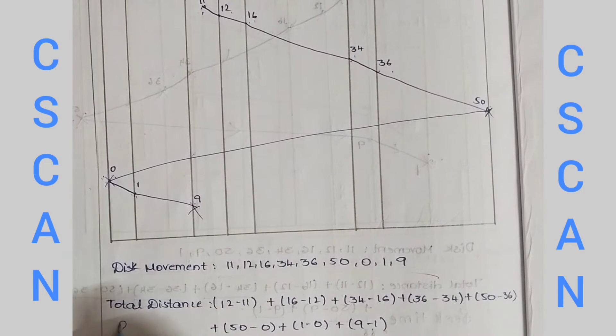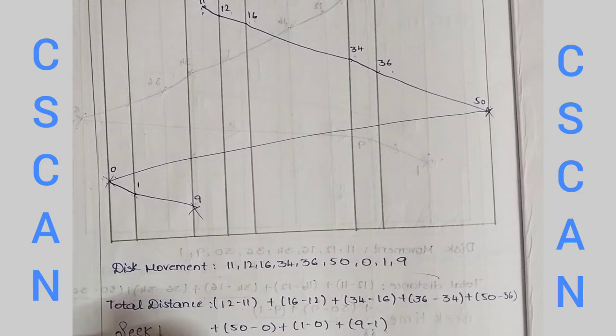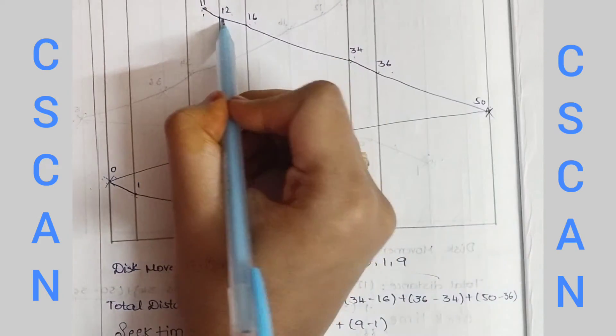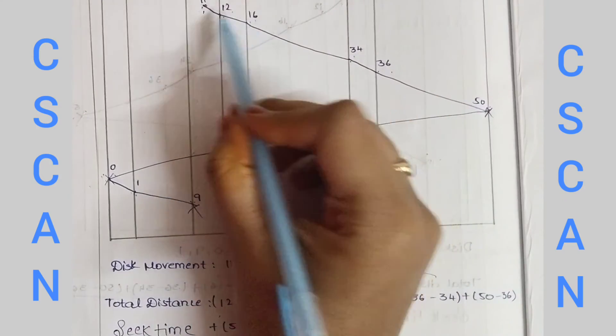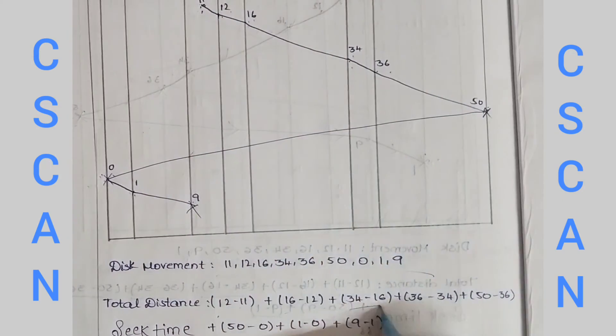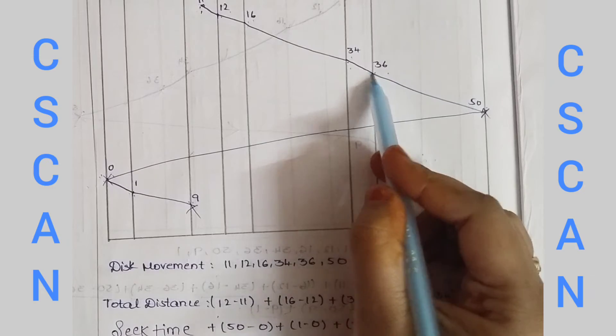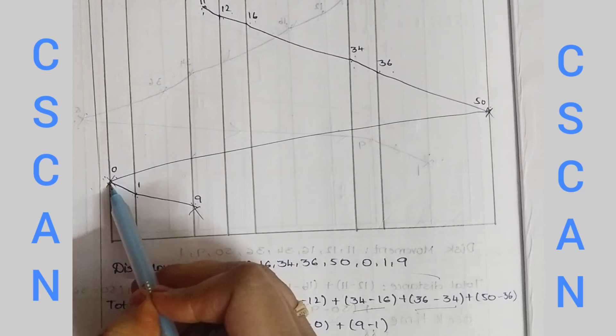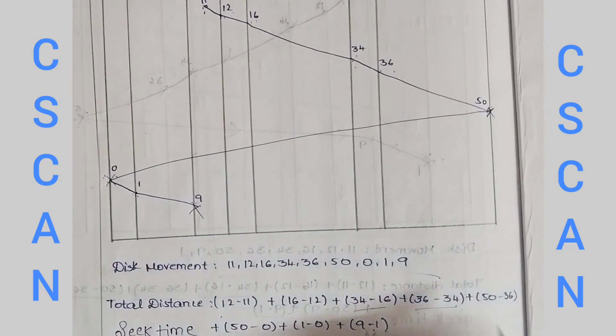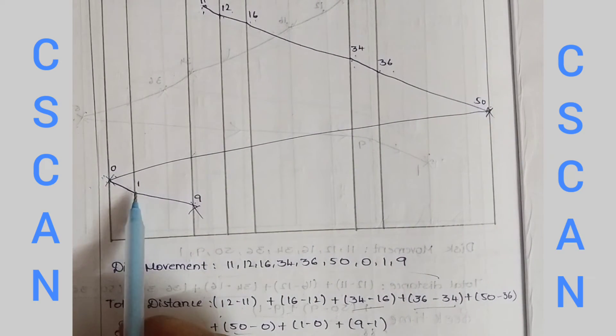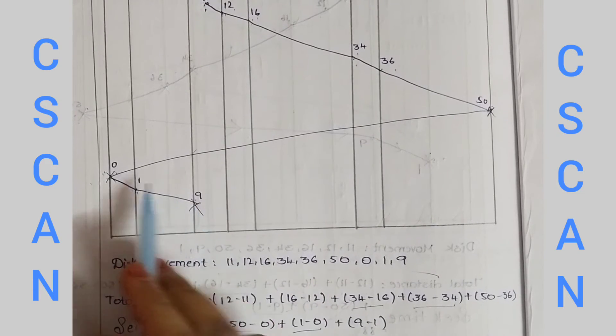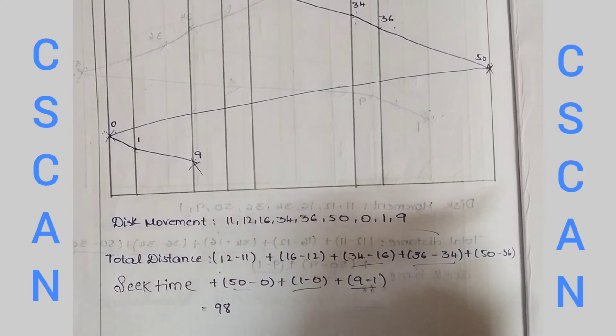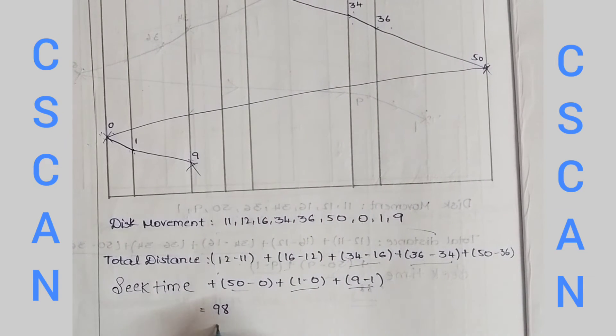Total distance means seek time. Seek time will calculate greater number minus smaller number. So 12 minus 11, 16 minus 12, 34 minus 16, 36 minus 34, 50 minus 36, 50 minus 0, next is 1 minus 0, next 9 minus 1. In this case, the disk movement is 98.